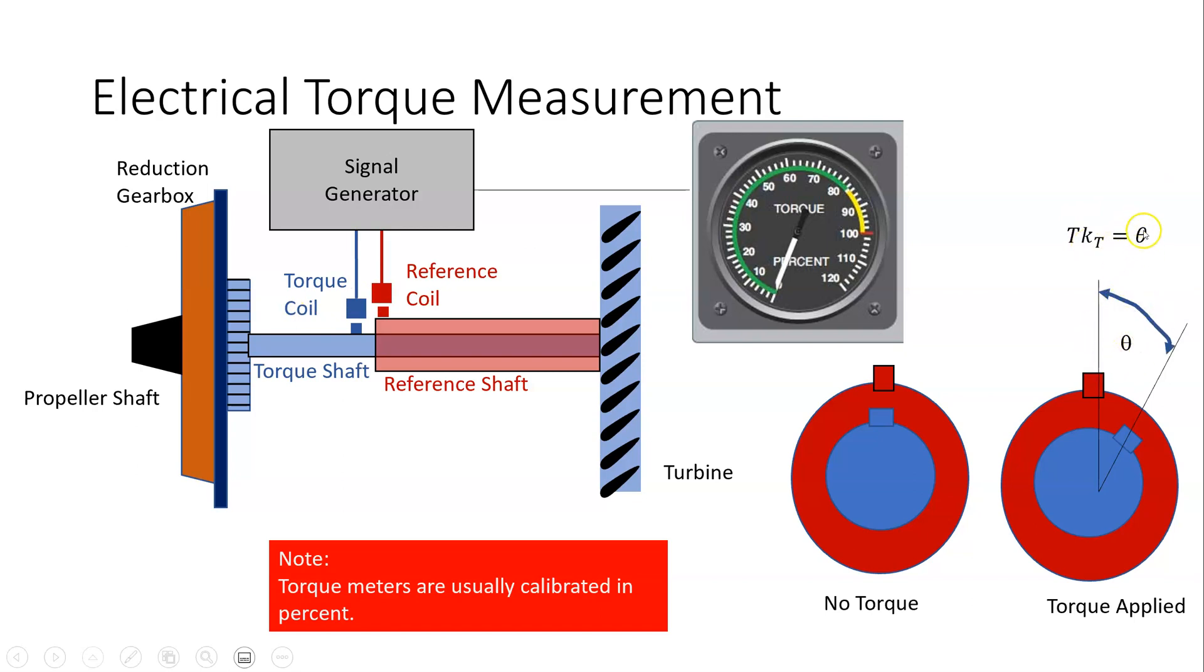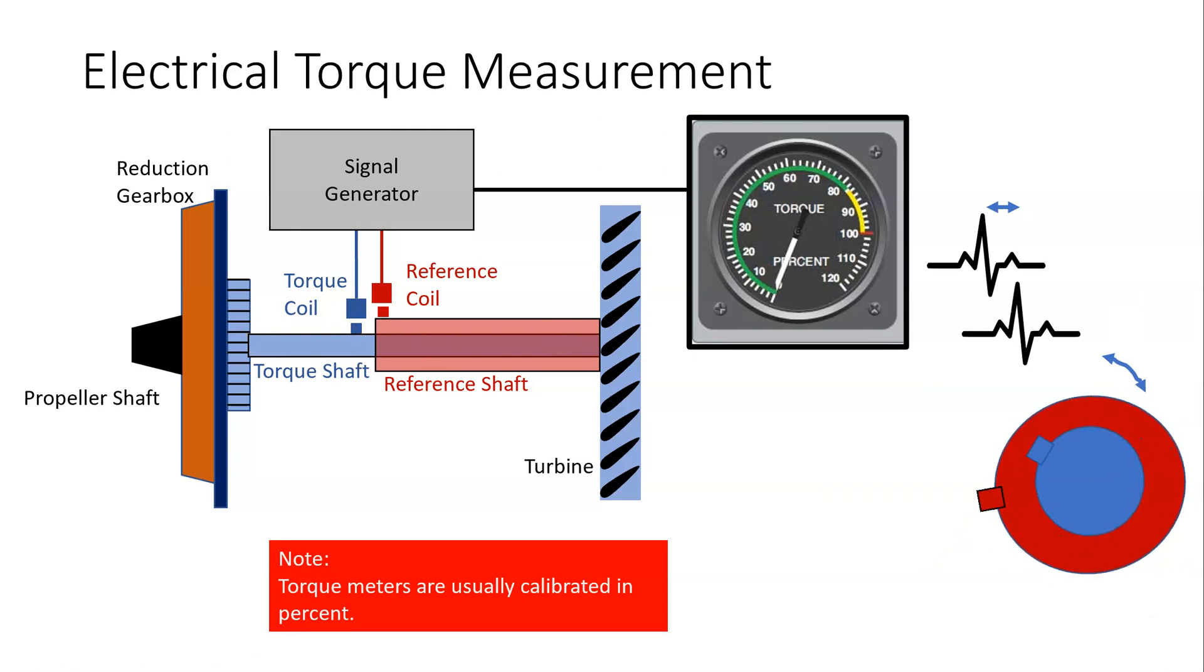So the shafts are out of phase, if you like, so there's this angle of twist between this part and this part due to this torque reaction. So when the shafts rotate, they're inducing a voltage in the coils and the signal generator here is looking at the phase angle between the induced voltages. So it's looking at the phase angle between the reference coil and the torque coil. And that phase angle theta will be equal to the angle of twist theta here.